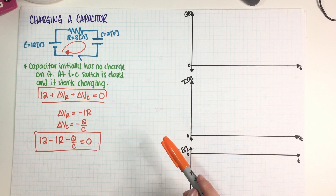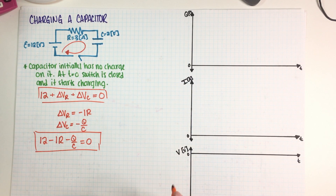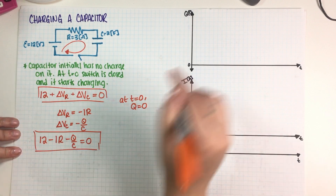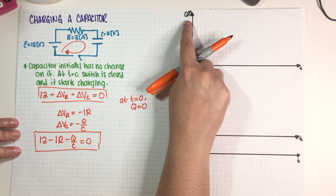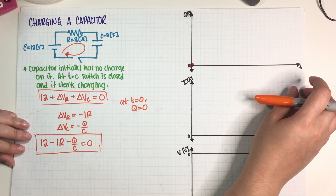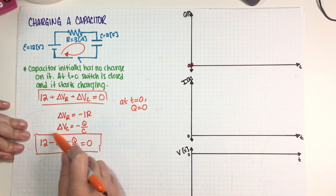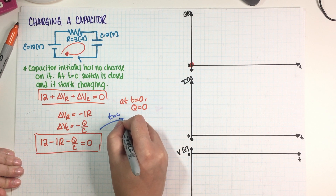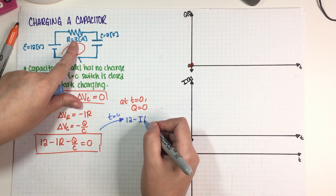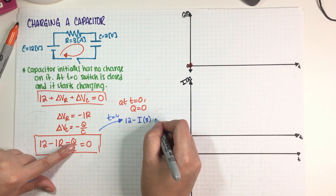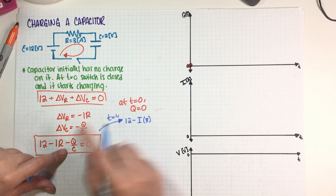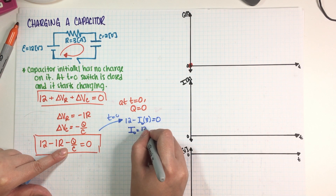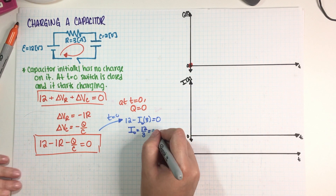At the very beginning, the capacitor is completely uncharged, which means Q is equal to zero. So the initial value for the charge is just zero. For the initial current, if I take this and say T equals zero, then 12 minus IR equals 12 minus 3I, and Q is zero, so Q over C drops out. The initial current is 12 divided by 3, which equals 4 amps.